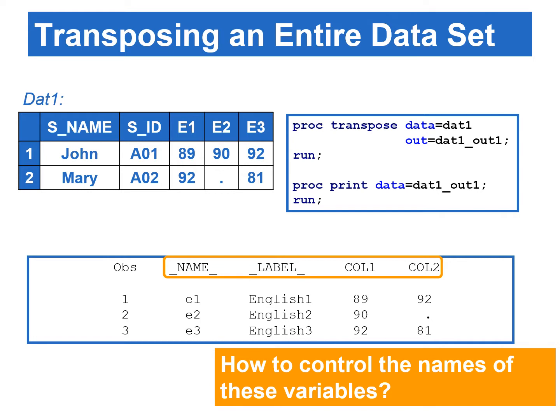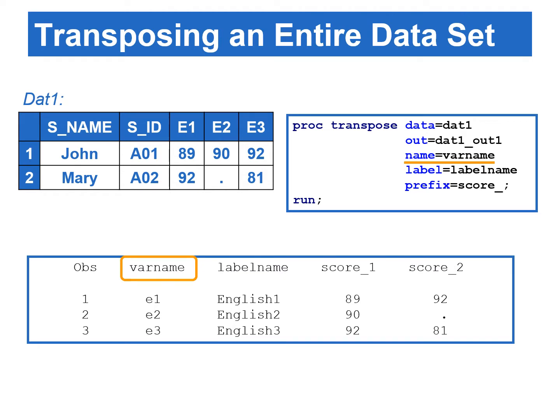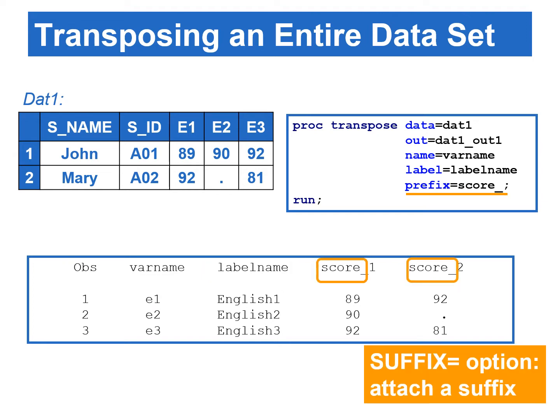To control the names of these variables, we add a few options to the PROC TRANSPOSE statement. The NAME= option specifies the name of the variable in the transposed data set that contains the variable names being transposed — we use 'var_name' to replace the default _name_. The LABEL= option specifies the name for the variable containing the labels — we use 'label_name' to replace _label_. The PREFIX= option places a prefix on transposed variable names; in our example we use SCORE_ as the prefix. You can also use the SUFFIX= option to attach a suffix to transposed variable names.